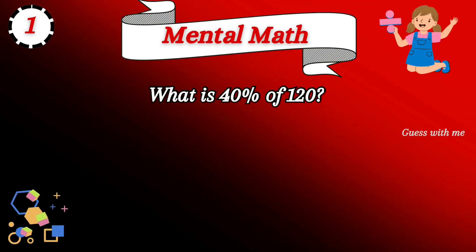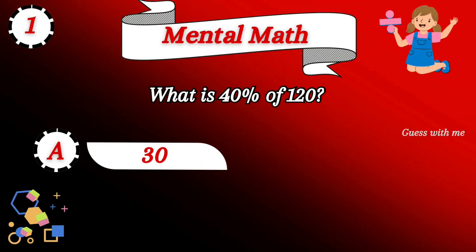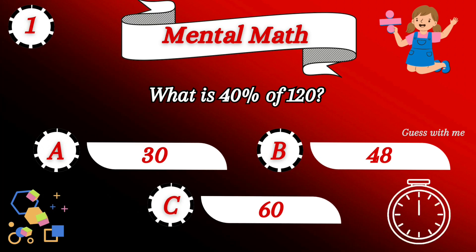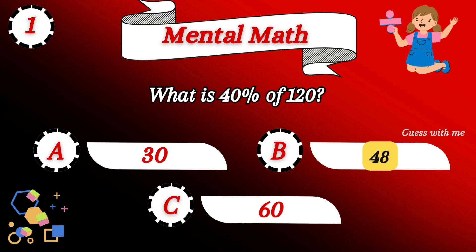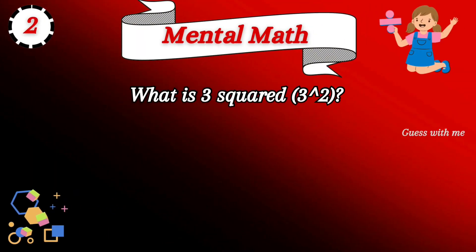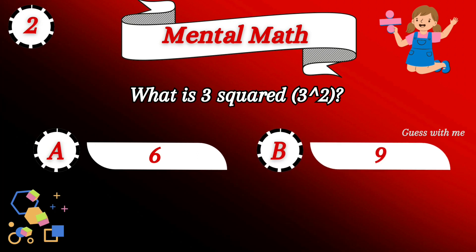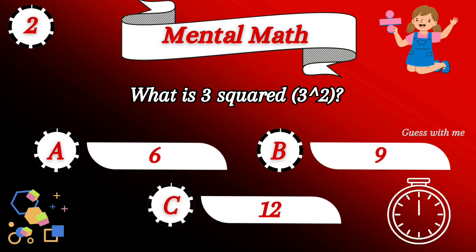Let's get started. Here is question number one: what is 40 percent of 120? The answer is 48. Here is question number two: what is 3 squared? The answer is 9.